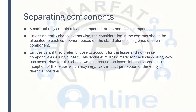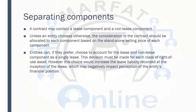Now we have separating components. A contract may contain a lease component and a non-lease component. Unless an entity chooses otherwise, the consideration in the contract should be allocated to each component based on the standalone selling price of each component. Entities can, if they prefer, choose to account for the lease and non-lease component as a single lease. The decision must be made for each class of right-of-use asset. However, this choice would increase the lease liability recorded at the inception of the lease, which may negatively impact perception of the entity's financial position.